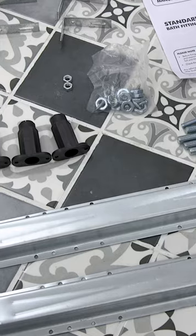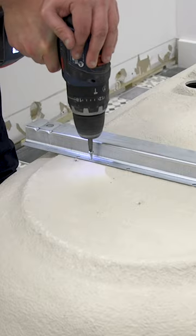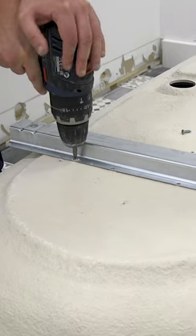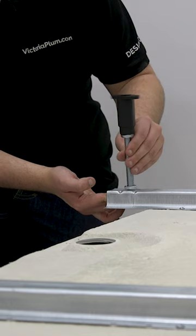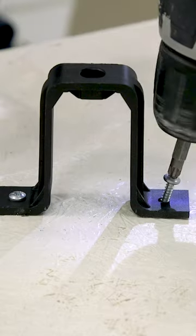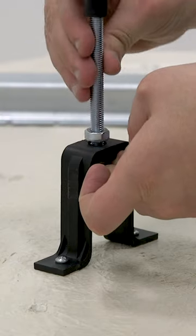Using the instructions provided, check you have all of the parts required for installation. Now attach the brackets to the underside of the bath and fix the legs into the corresponding holes. Then fit the centre leg bracket and leg itself.